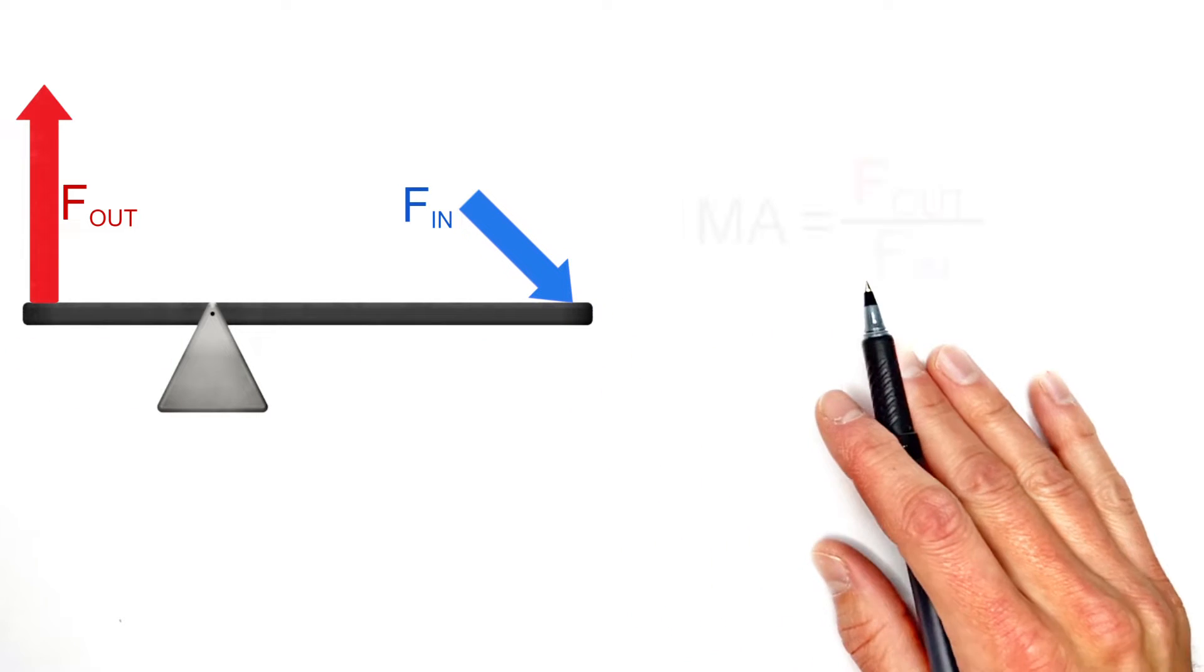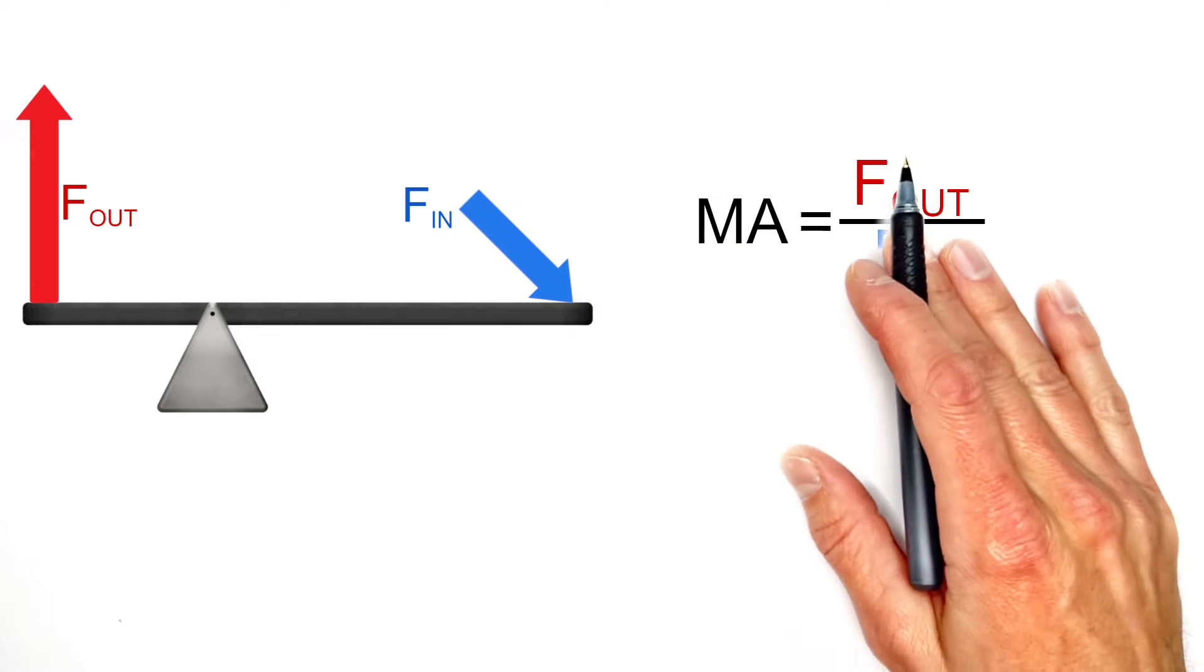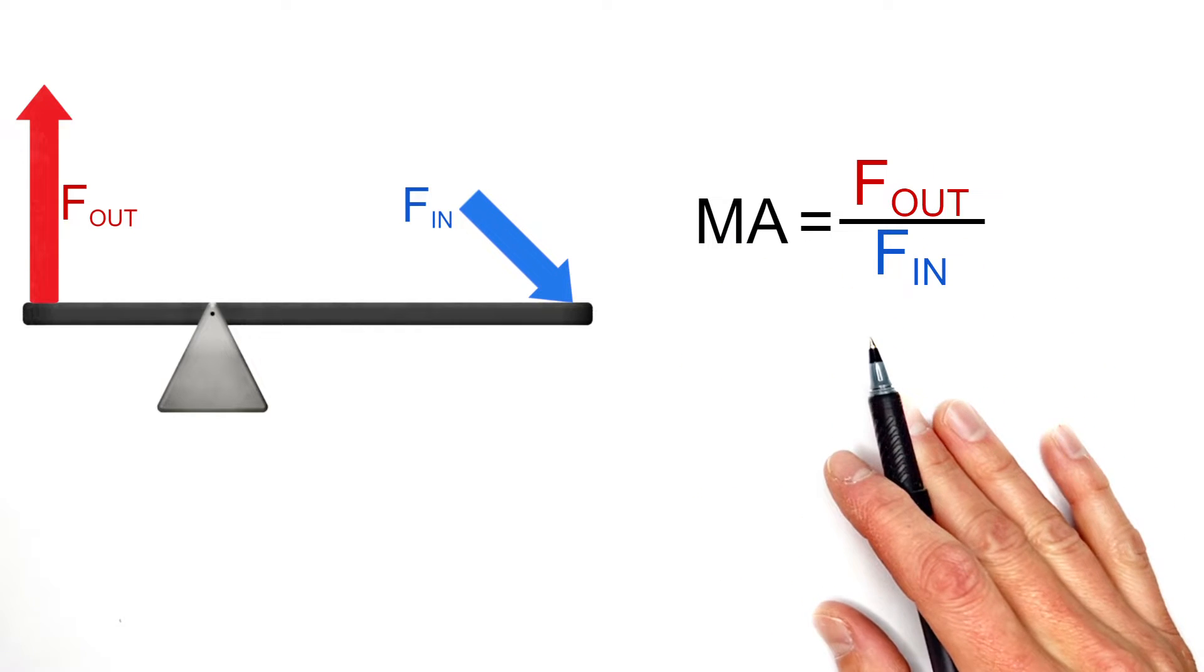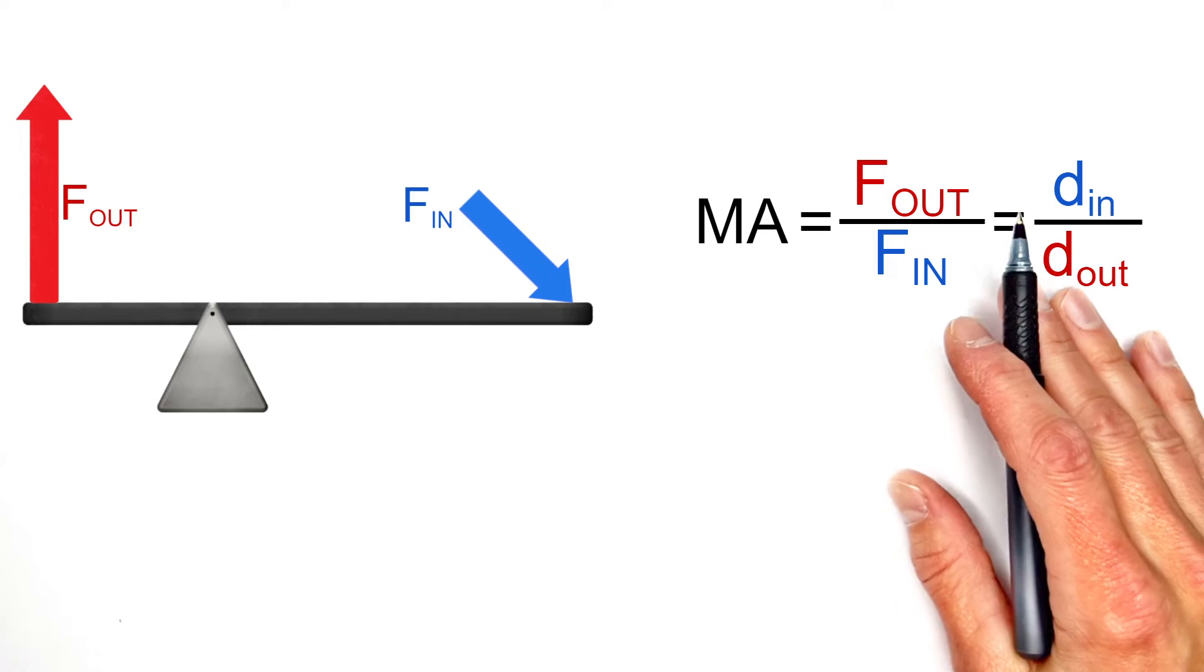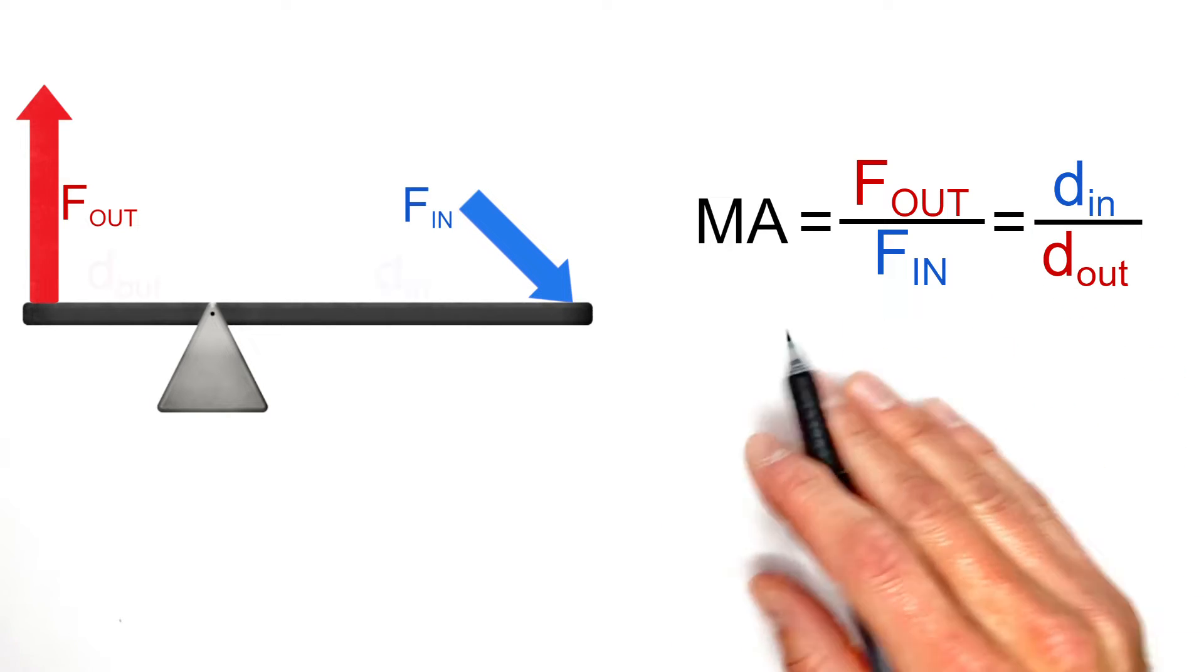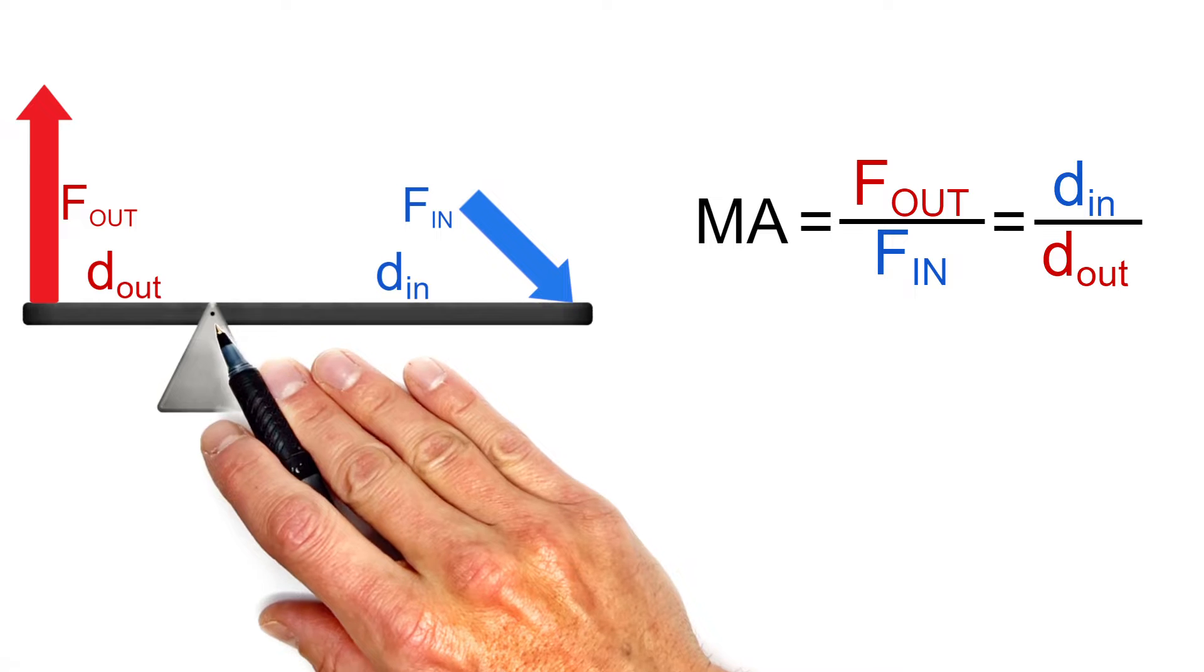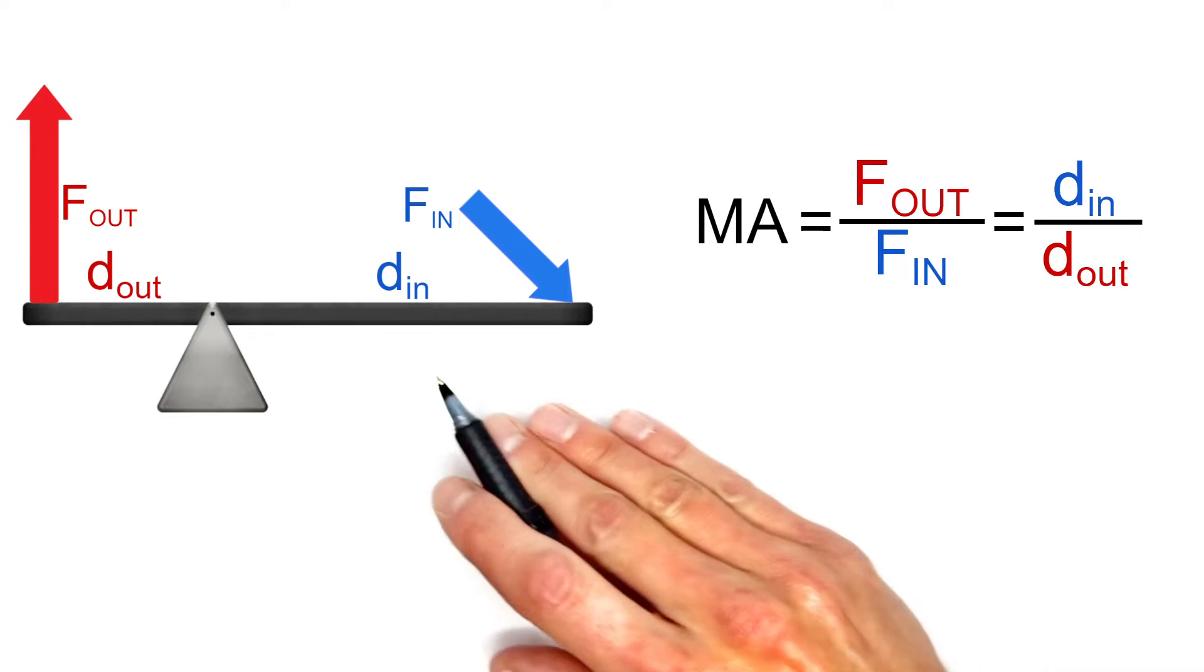Now for any simple machine, mechanical advantage is defined as the force out divided by the force in. And for a lever, we typically calculate mechanical advantage as d in over d out, where d is the distance from the fulcrum or the pivot point to either of the forces.